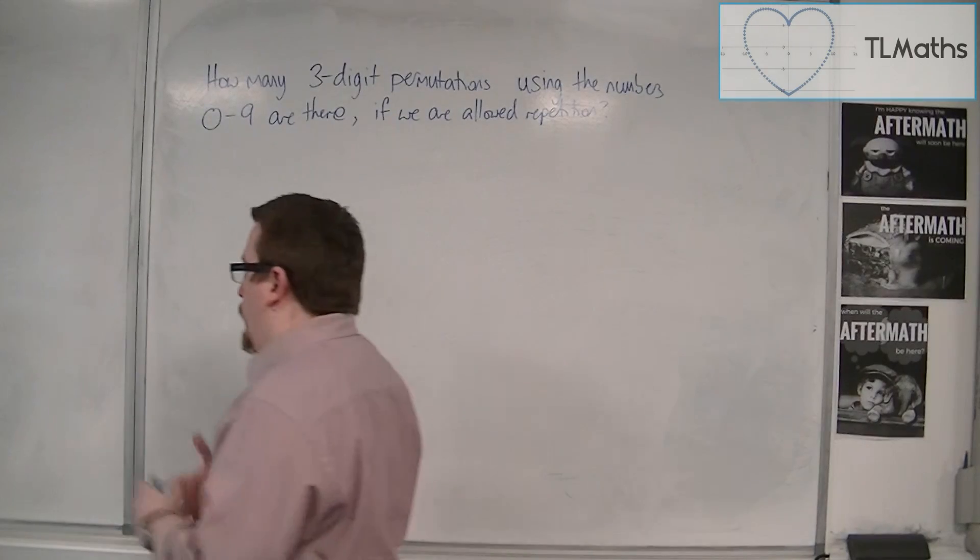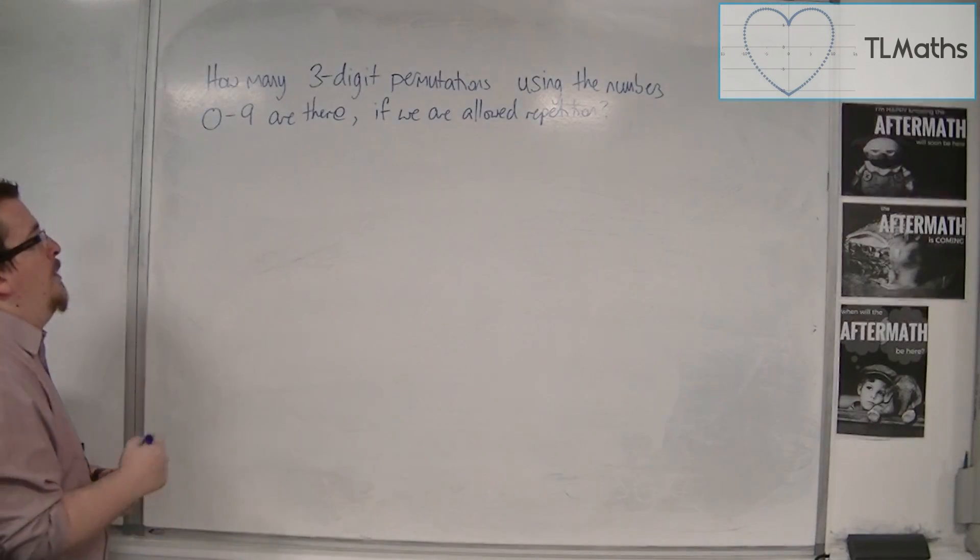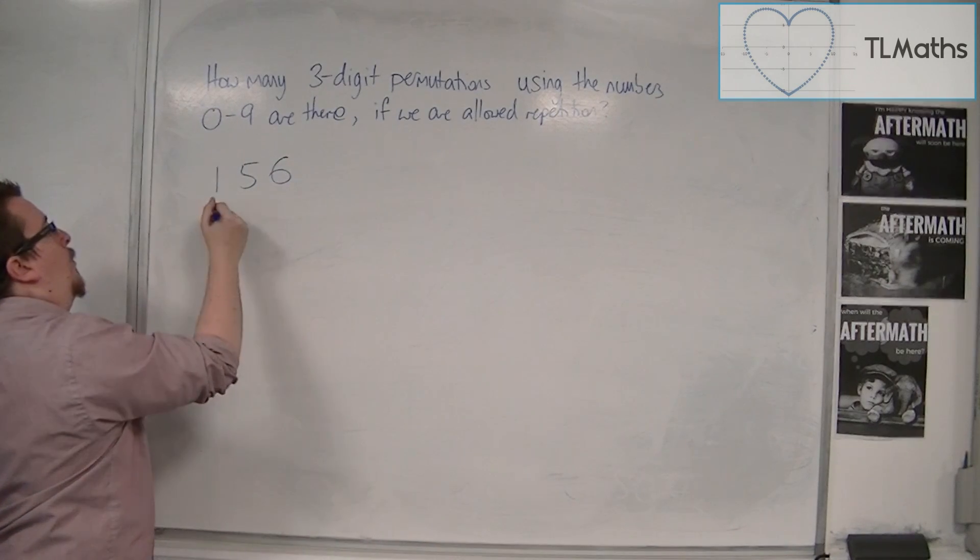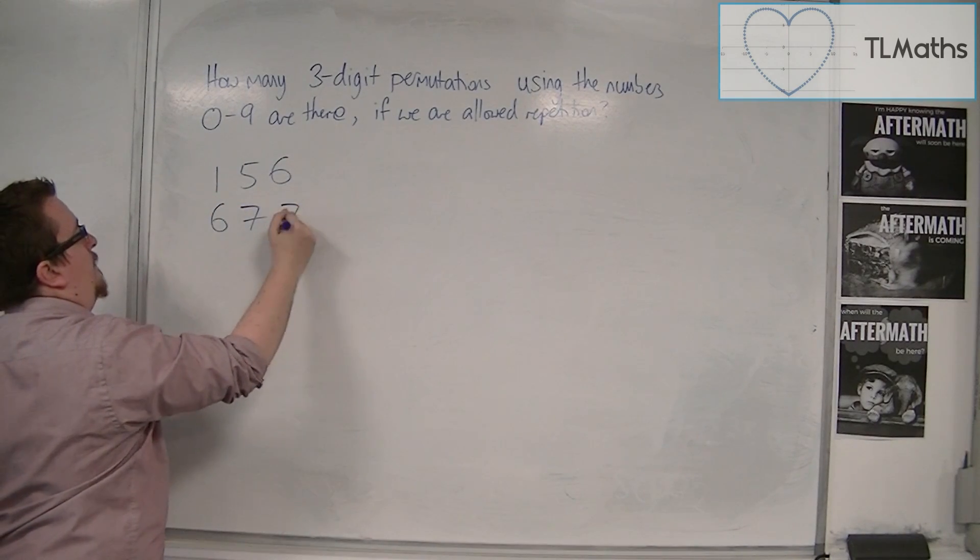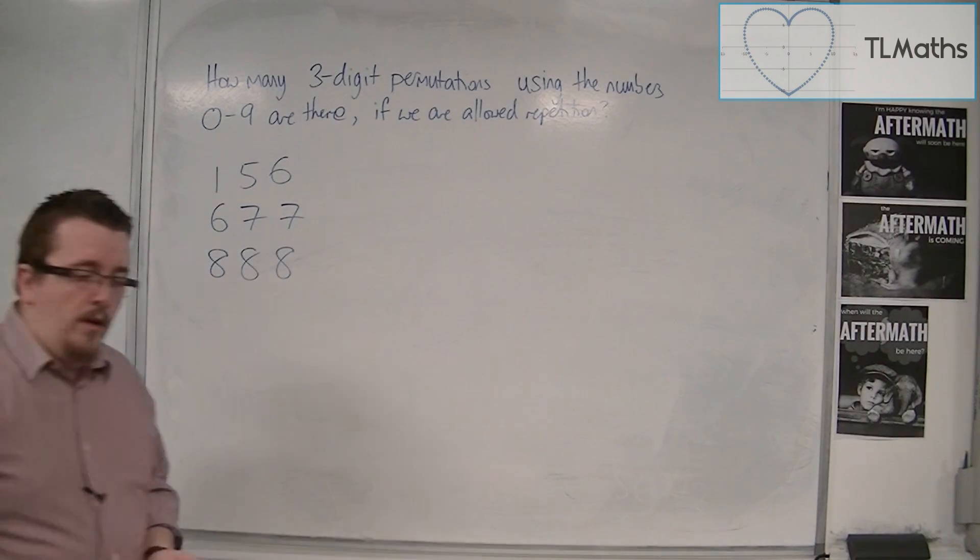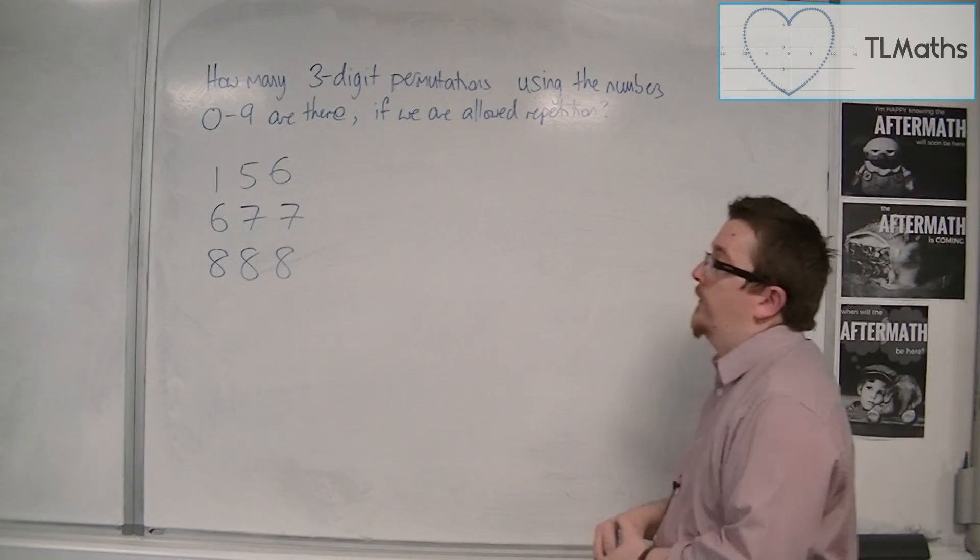Okay, so for example, we will be looking at numbers like 1, 5, 6, or 6, 7, 7, or 8, 8, 8, for example. These are all possible permutations in this.